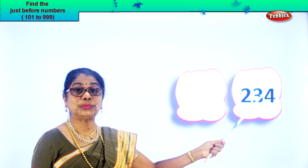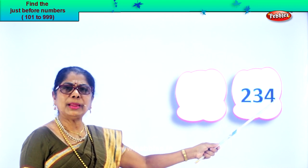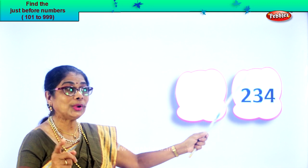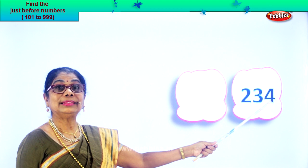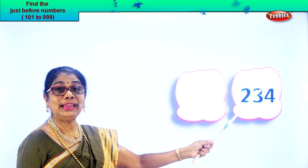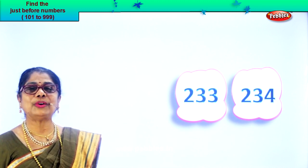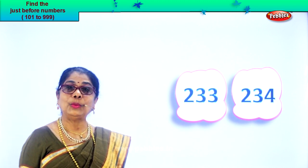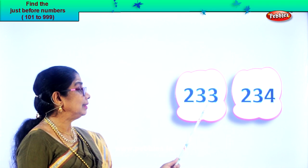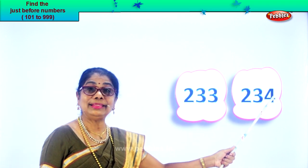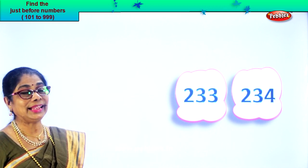Hundreds, tens, ones place — 234. What number comes before 4? Three. So the number before is 233. That's how you identify when there are three numbers. You have 233, 234. Did you enjoy that interesting exercise? Let's take the next number.